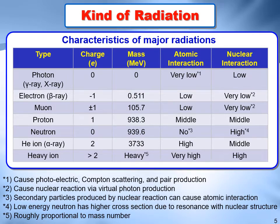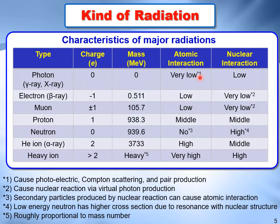As you may know, several kinds of radiation exist, and this table summarizes the characteristics of major radiations. Among them, photon — which is occasionally called gamma ray or x-ray based on its origin — is the most famous radiation. It has no charge and no mass, the same as conventional light, but it has rather high energy and the ability to cause atomic interactions. We do not explain the details of each radiation here, but one important point is that the abilities to cause atomic and nuclear interactions vary greatly with radiation type, and it is better to roughly understand the characteristics of each radiation before learning how to use FITS.